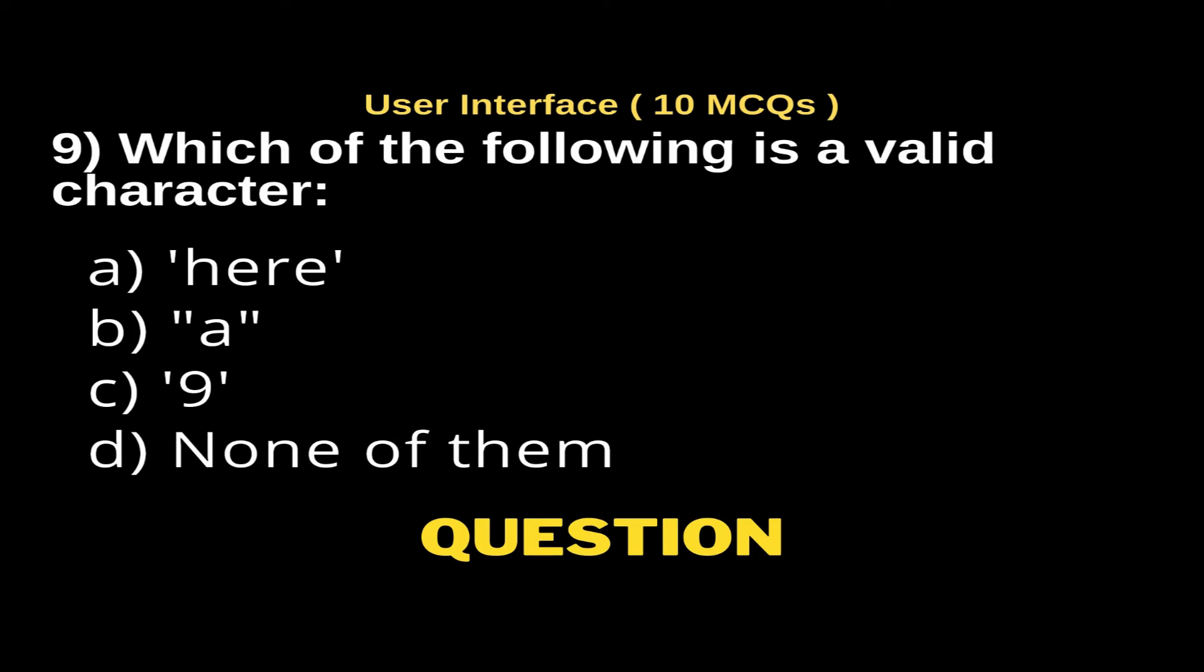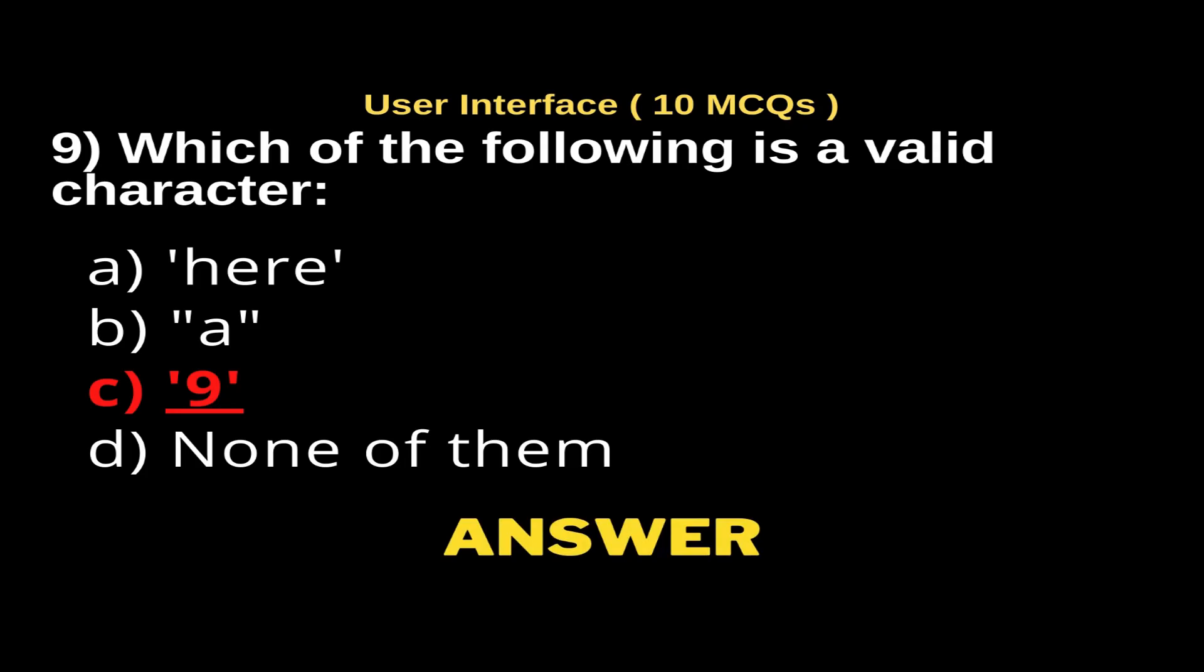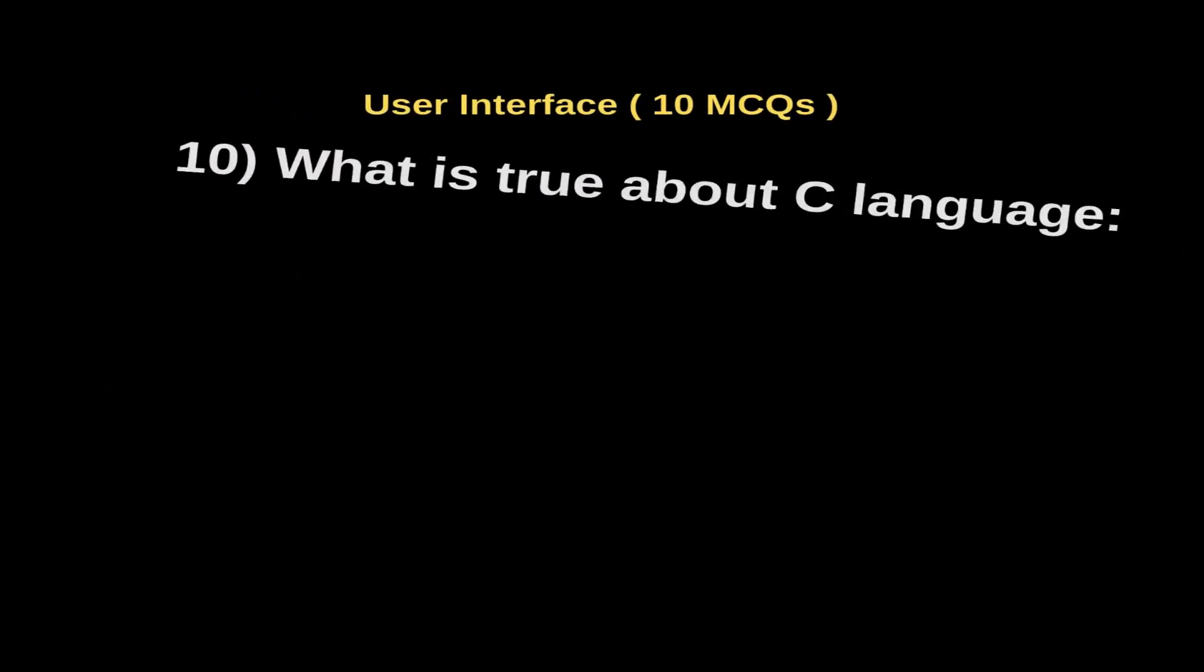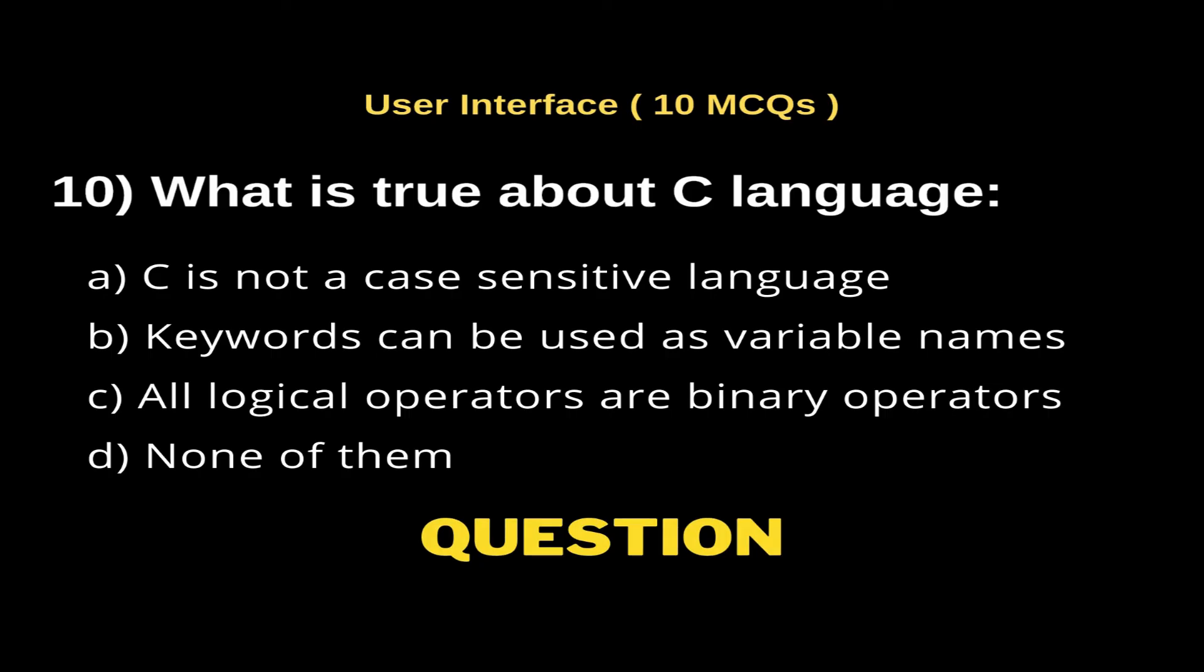Question 9: Which of the following is a valid character? Options: a) here in single quotation, b) a in double quotation, c) nine in single quotation, d) none of them. The right answer is option c, nine in single quotation.